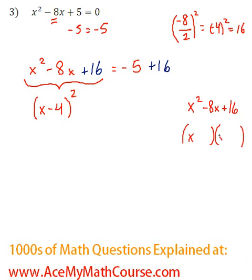Because we're looking for two numbers that multiply to 16 and add up to negative 8. So negative 4 and negative 4. And x minus 4 times x minus 4 is just x minus 4 squared.